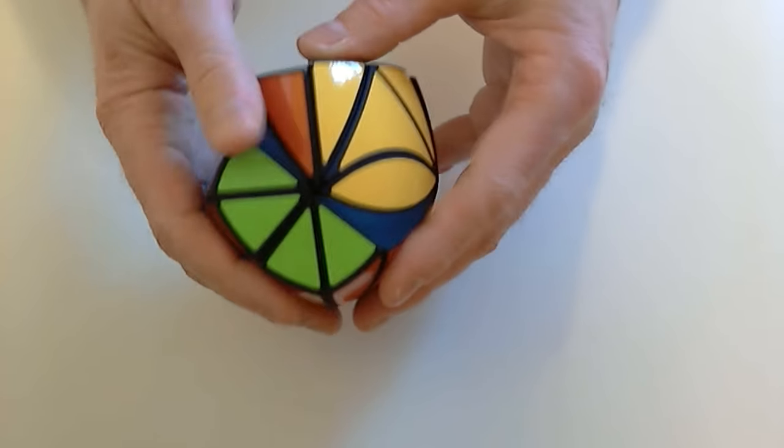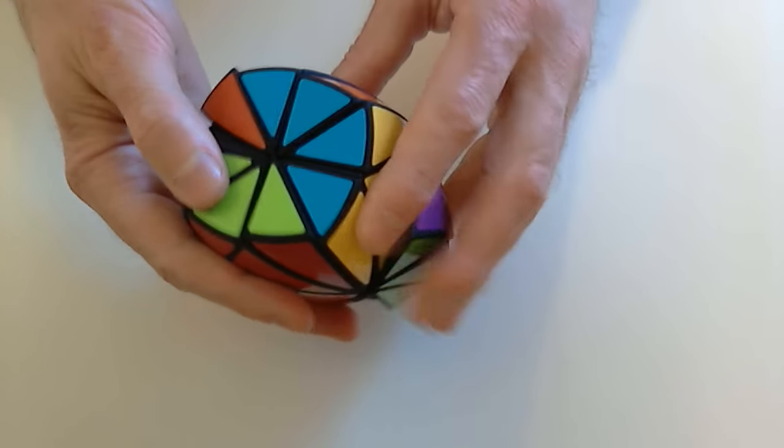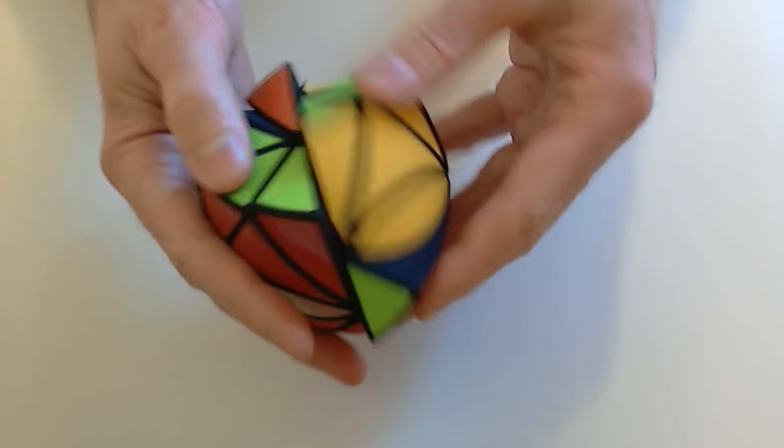But now, this axis is free to turn in 90 degree increments. Like so. The 120 degree turns are never blocked.